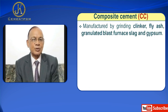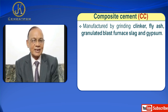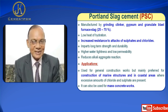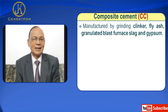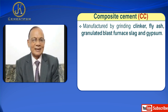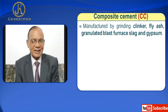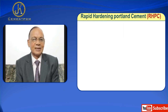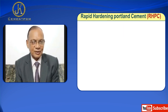Next is Composite Cement, CC. It is manufactured by grinding clinker, fly ash, and granulated blast furnace slag. Composite cement will be discussed in detail in a separate video. It was introduced in India only about 5 years back, whereas in the USA and European countries it has been used for a long time.